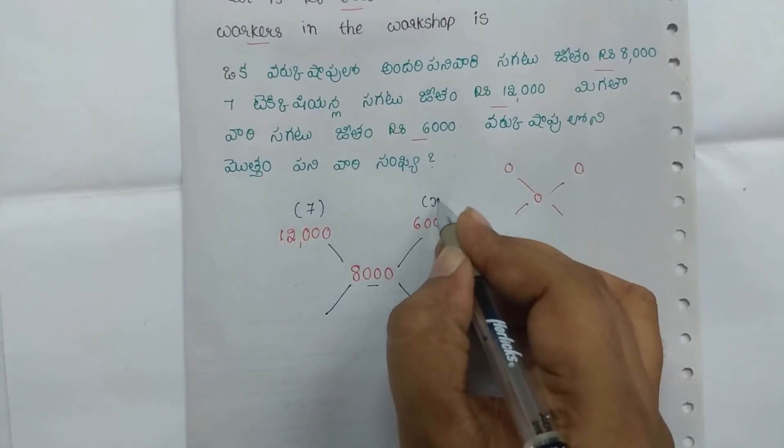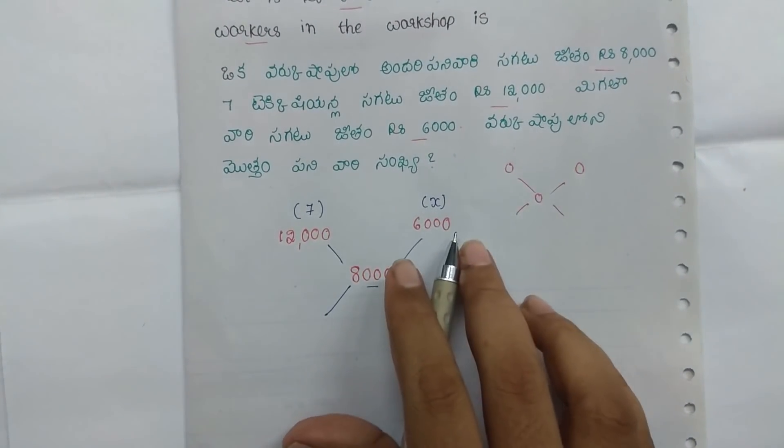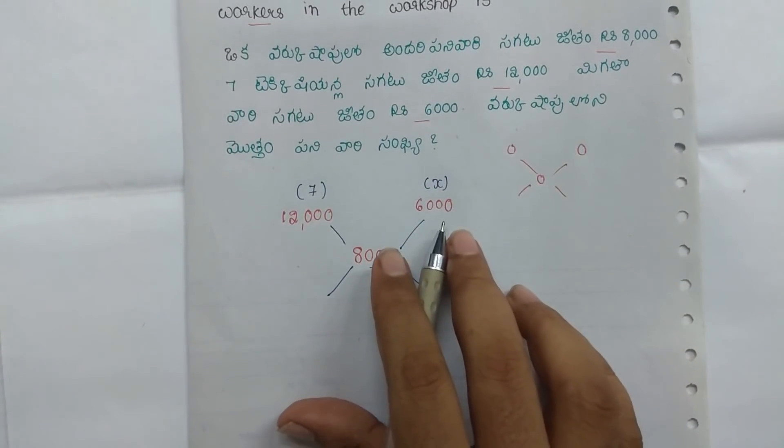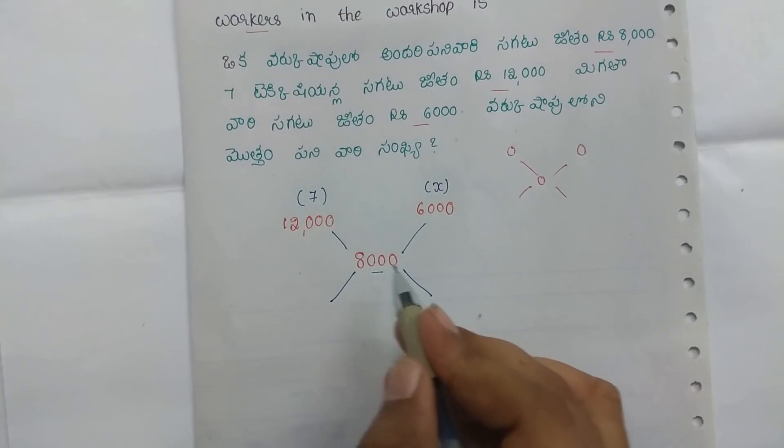So 80,000. The next group is 80,000, and then 80,000 is 80,000.